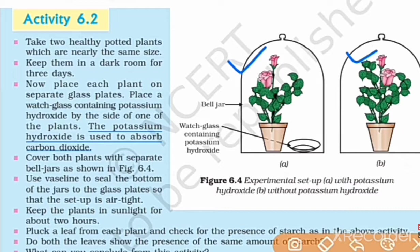Place a watch glass containing potassium hydroxide (KOH). The potassium hydroxide absorbs carbon dioxide. You have to cover the plants with the help of a bell jar.